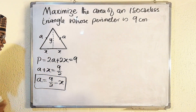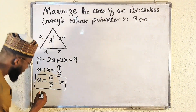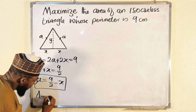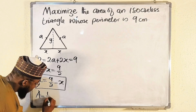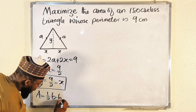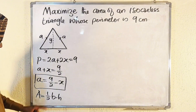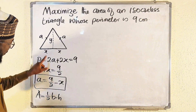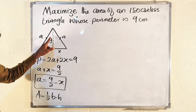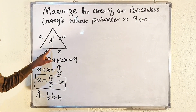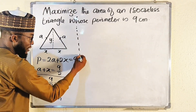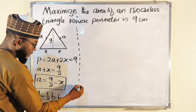Now let's go back to the area. Area equals half multiplied by the base multiplied by the height. The base is x + x = 2x, and the height is y. So I need to find the value of y first.